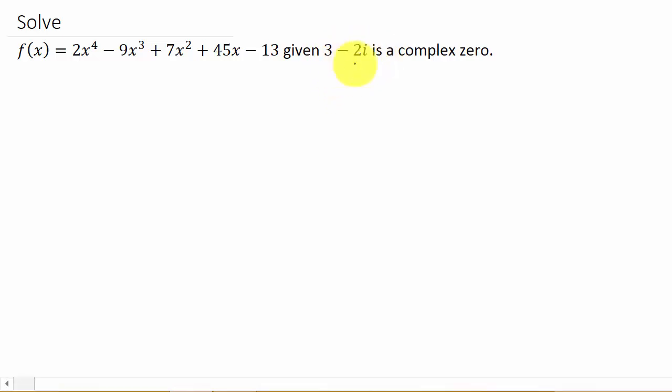Alright, so let's use synthetic division to break this down. We're going to divide the zero into the polynomial. So let's see, we've got 3 minus 2i, and I've got 2, negative 9, 7, 45, and negative 13.